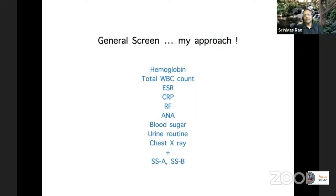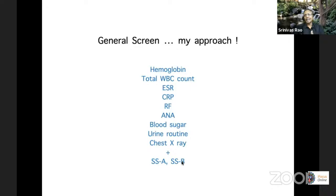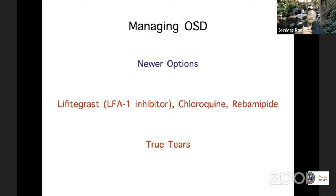Over a period of time you're trying to bring the patient to some baseline treatment level. You must do a systemic evaluation, particularly if you have a very severe dry eye at the beginning or in a very young patient. I do a hemoglobin, WBC count, ESR and CRP to look for markers of inflammation. I look for rheumatoid factor and ANA, as these pick up the most common underlying connective tissue diseases. Do a blood sugar, look at urine protein and chest X-ray — if there's underlying tuberculosis, you don't want to start oral steroids. If you think there's dryness of the mouth or systemic features like tiredness, you can get a Sjögren's antibody profile done as well.